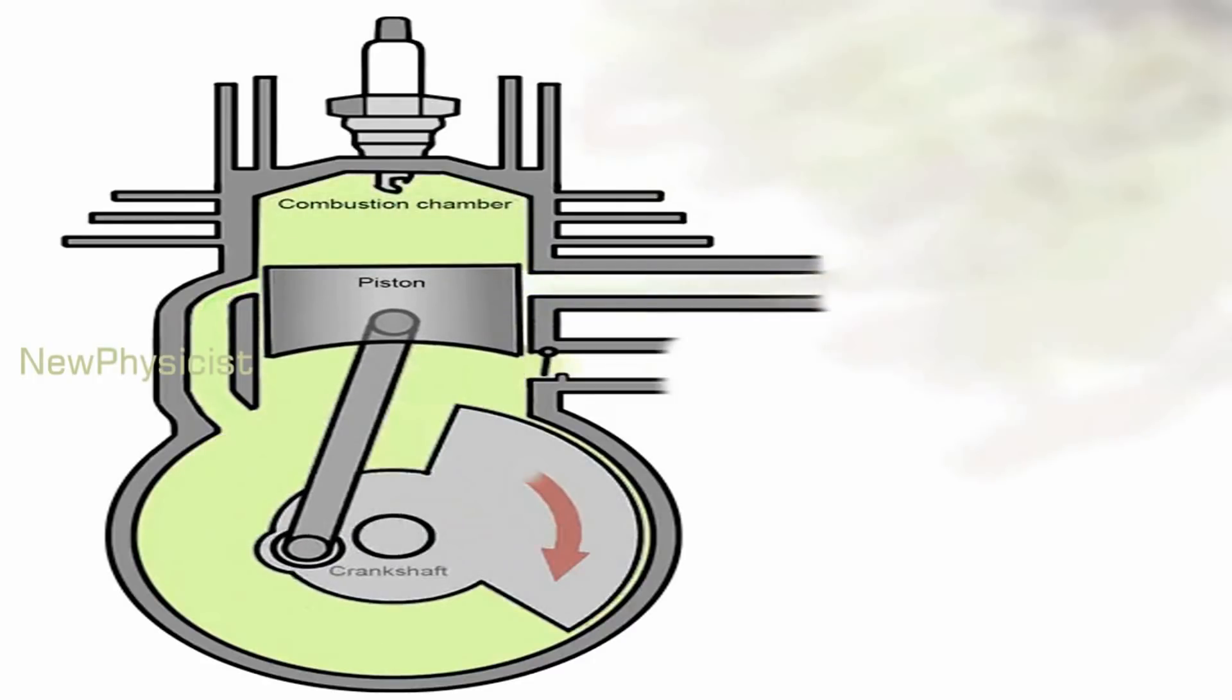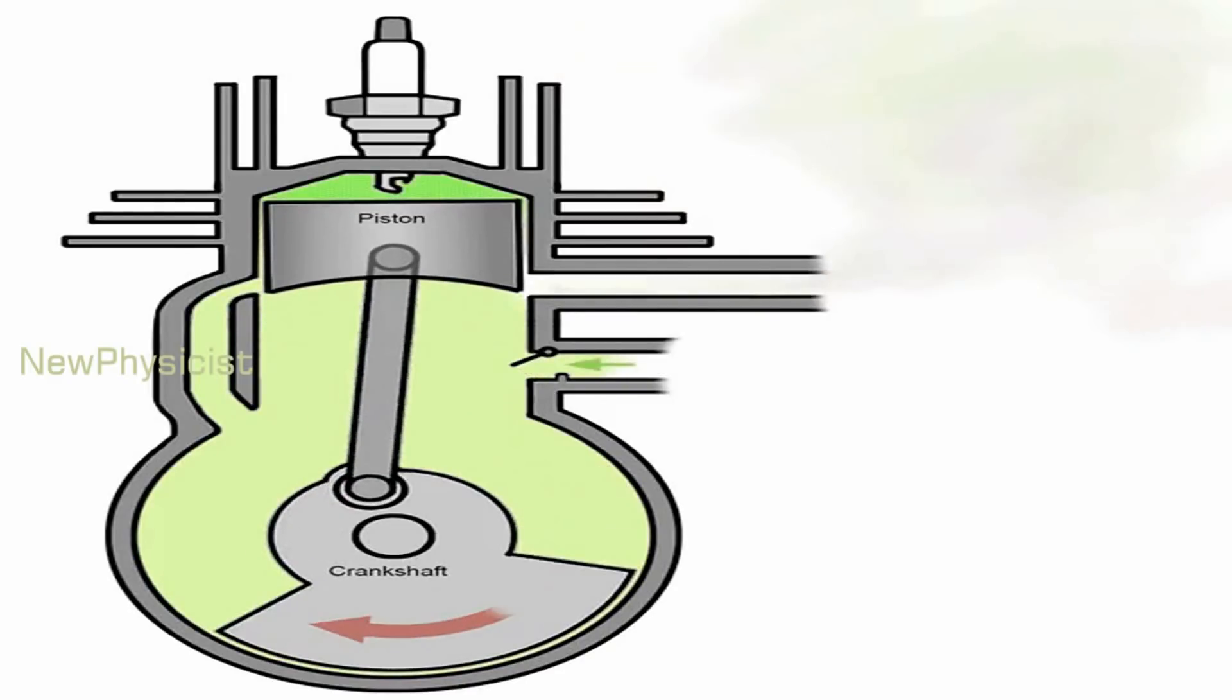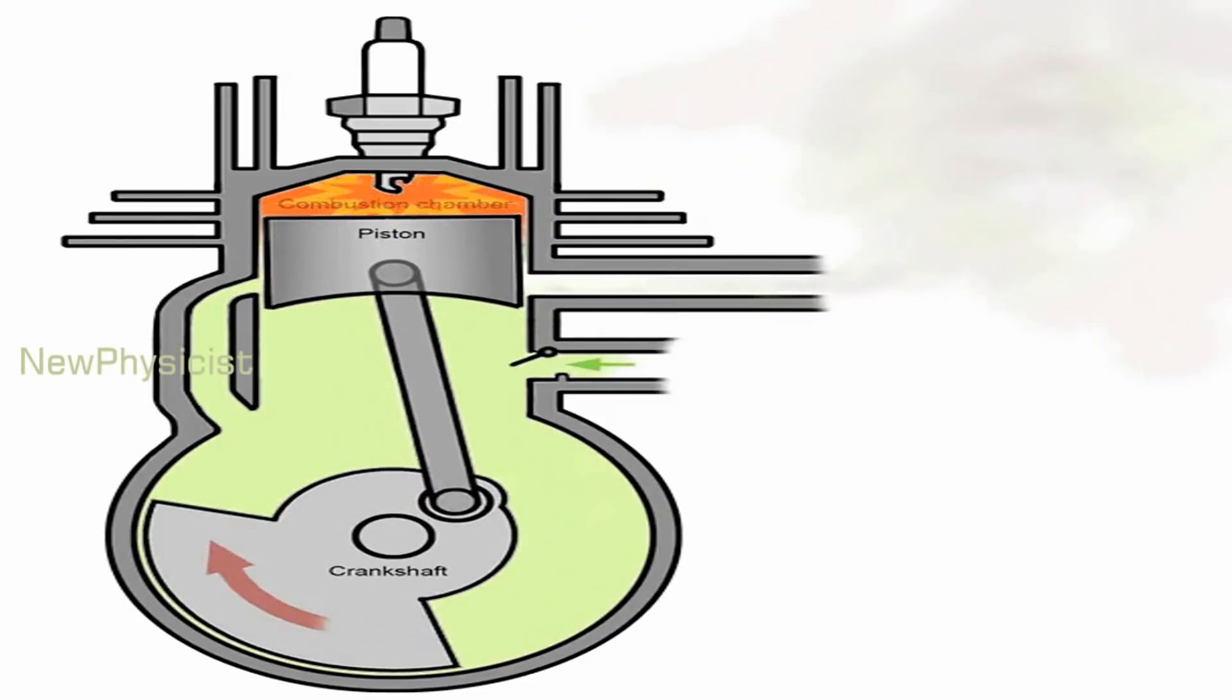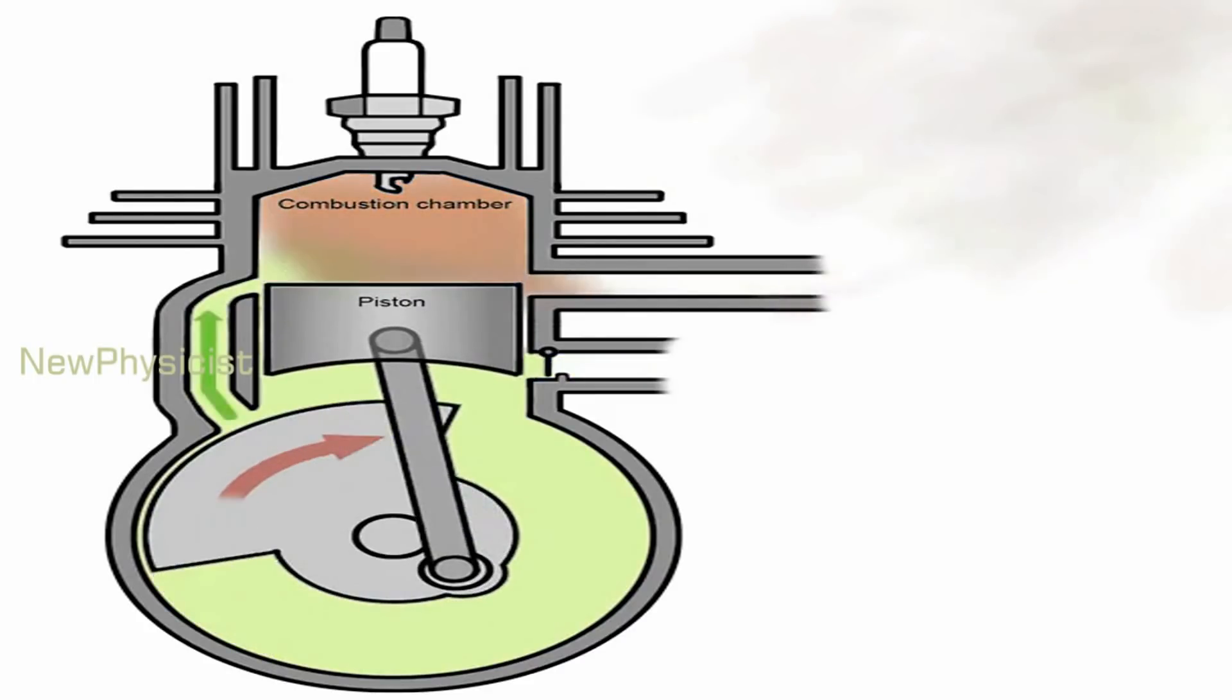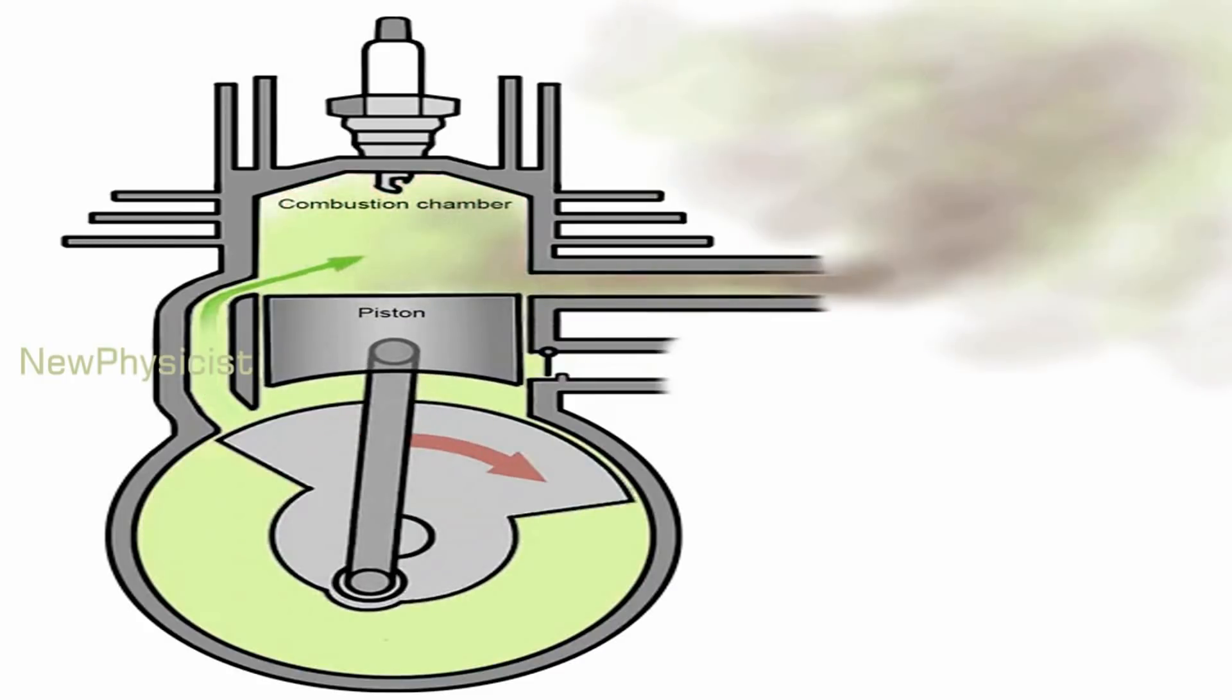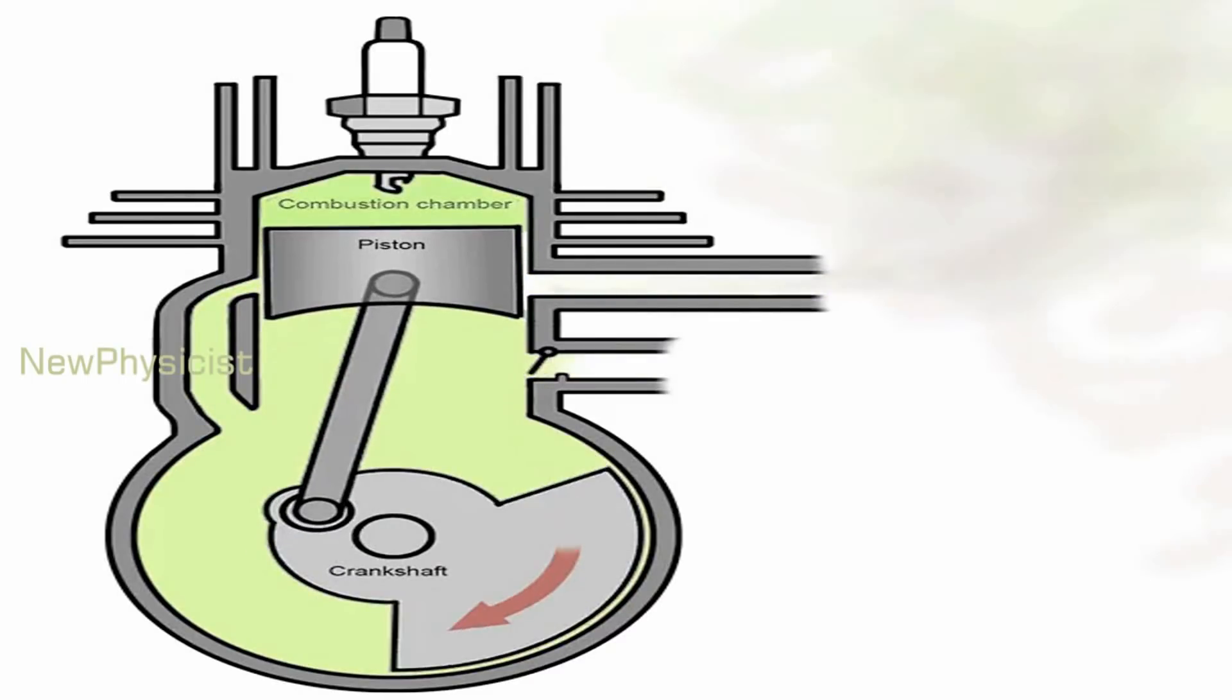Spent combustion gas rushes out through this port. The descending piston is simultaneously compressing the fuel-air mixture trapped beneath in the crankcase. As the piston descends further, it begins to expose two or more fresh charge ports, which are connected to the crankcase by short ducts.